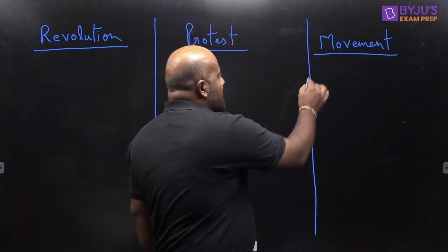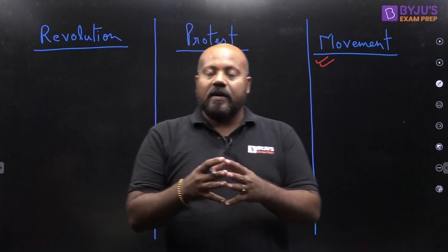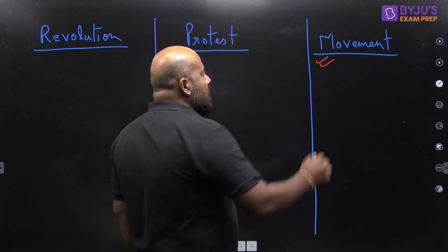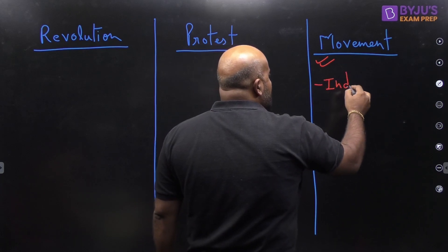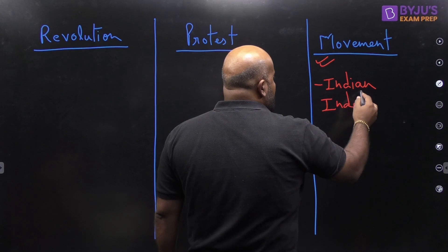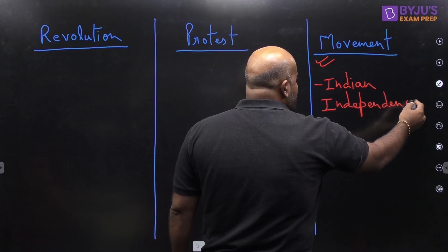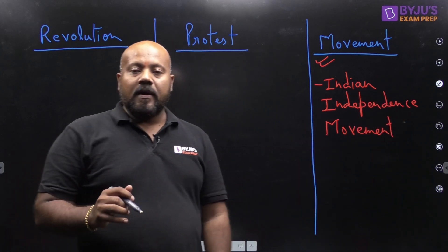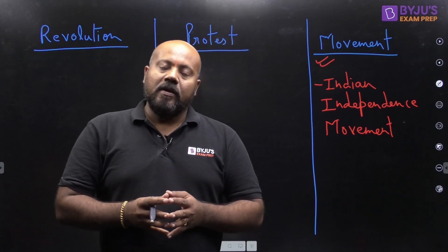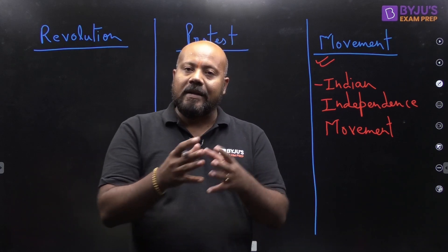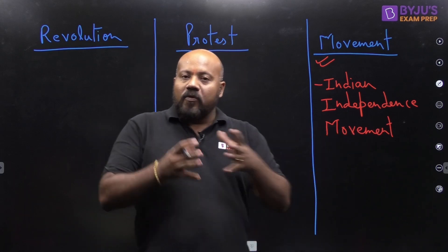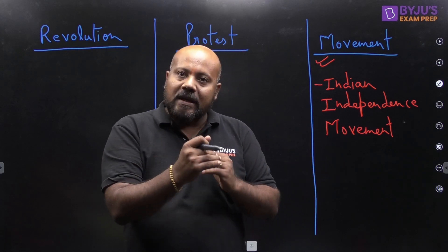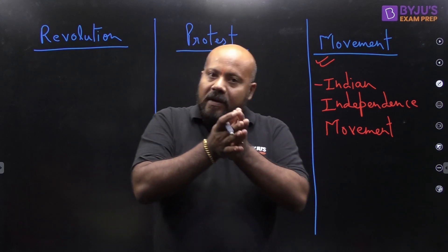But when you talk about a movement, the time duration is going to be comparatively large. The best example is the Indian independence movement. Movement is a long, ongoing process — it may comprise 5 years, 10 years, 20 years, and even 50 years or more.